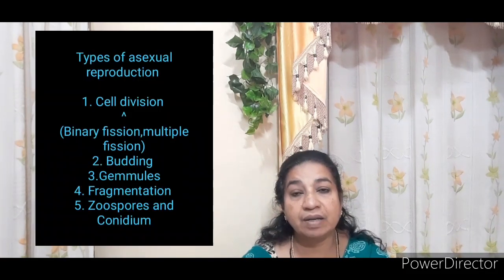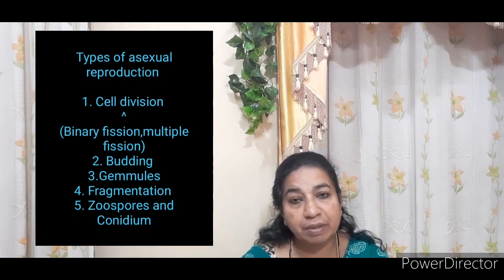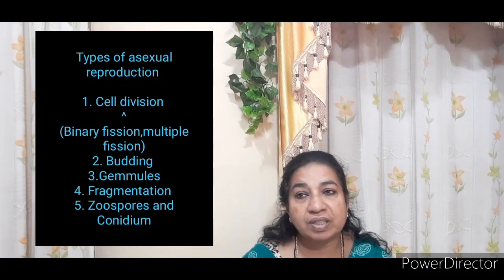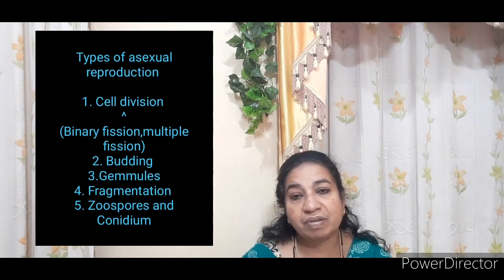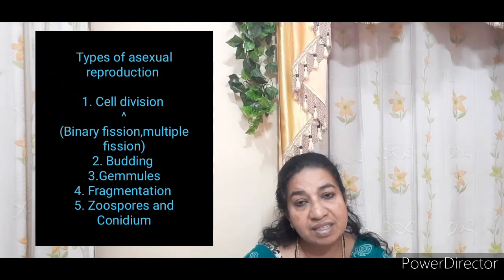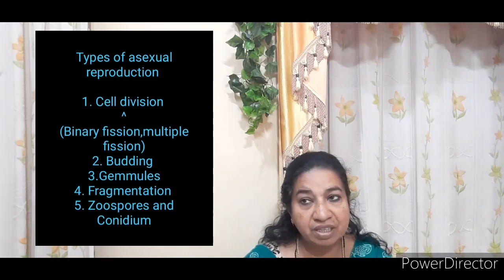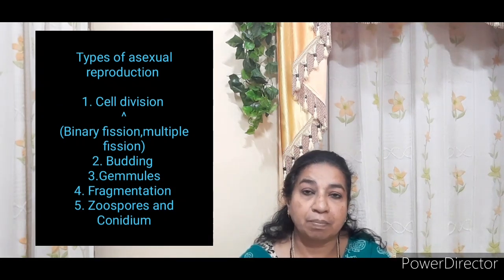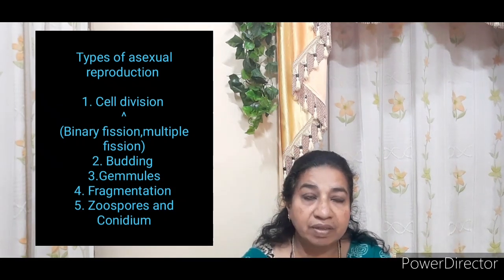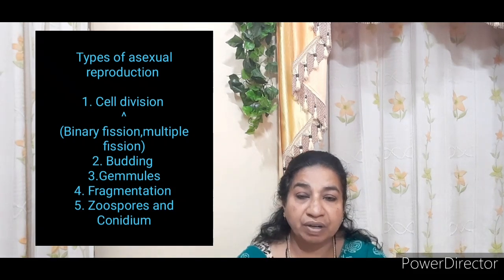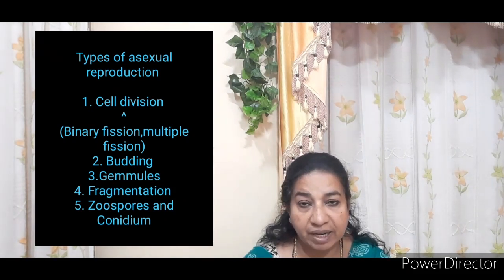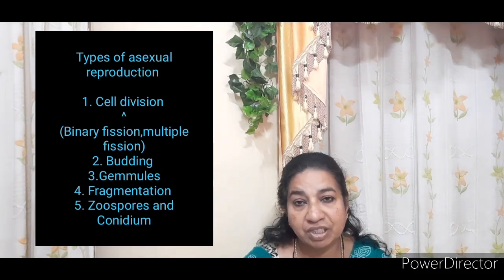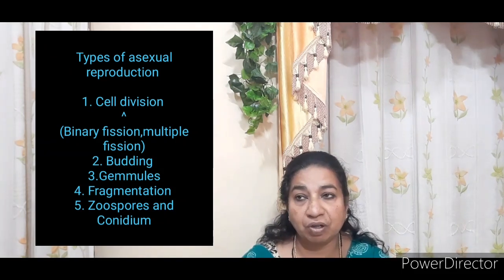Next we will discuss the different types of asexual reproduction. First is cell division, which has two types: binary fission and multiple fission. The next types are budding, gemmules, different types of spores — one is zoospores, another is conidia — and fragmentation.